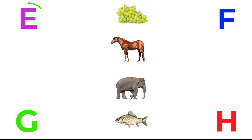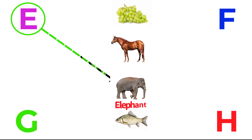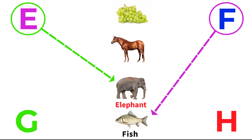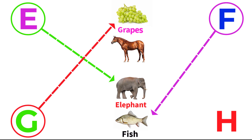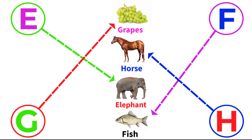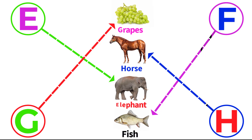E for elephant, F for fish, G for grapes, H for horse.